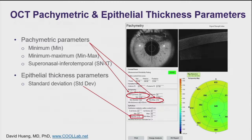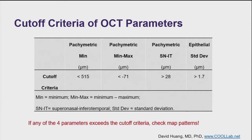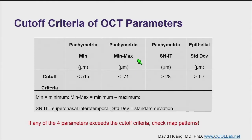I'll go over the most important parameters that I use in a cookbook recipe to help screen for early keratoconus. These include minimum pachymetry — if it's less than 515 microns, there's a possibility of early keratoconus. If the minimum minus maximum is less than minus 71 microns in the pachymetry map, there's sufficient focal thinning to merit suspicion. And if there's asymmetry in the pachymetry map — supernasal minus infratemporal sector difference of more than 28 microns — again, there is suspicion.